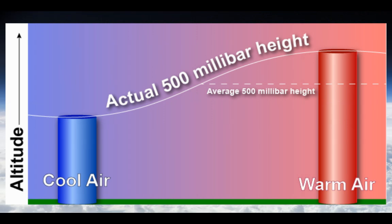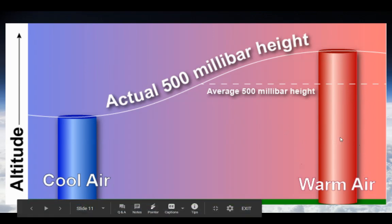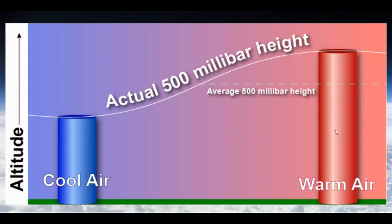Normally, the 500 millibar height is at about 5,600 meters above the Earth's surface. If you were to go up in a hot air balloon 5,600 meters, on average that would be about 500 millibars of pressure. When the air is warmer, that average height rises — warmer air causes the 500 millibar pressure height to be higher. Cooler air is more dense, so it causes the 500 millibar height to be lower.